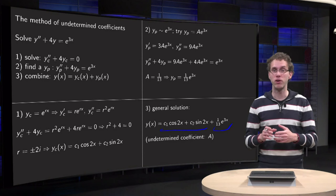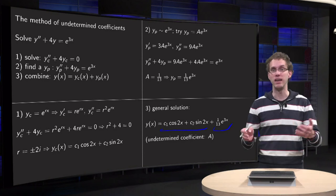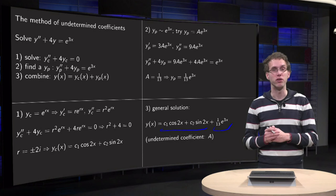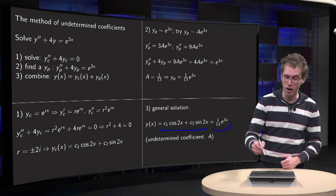So the undetermined coefficient in this case was the A, and the method of undetermined coefficients is named after this, that you do some trial solution containing one or more undetermined coefficients.